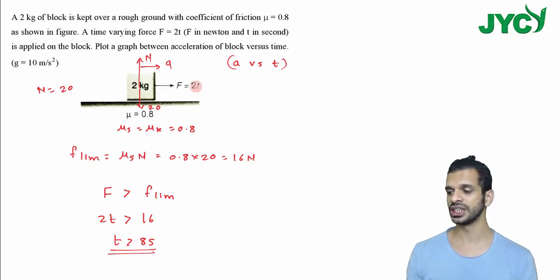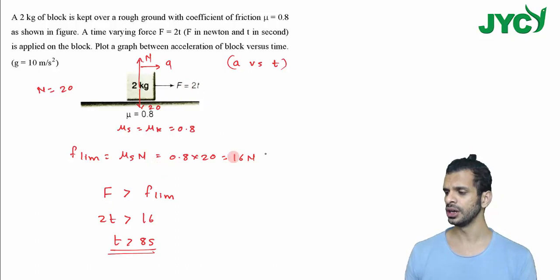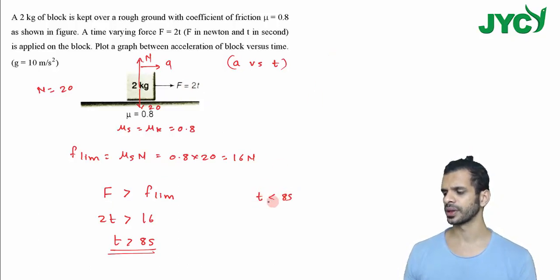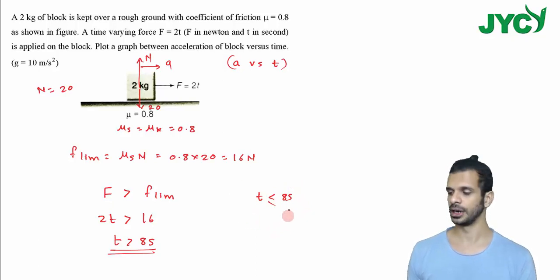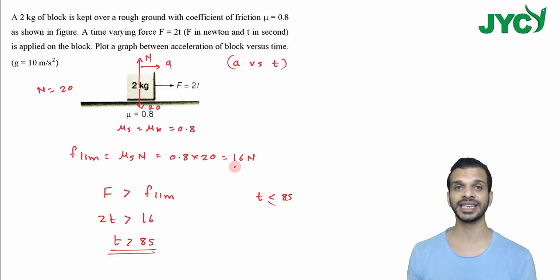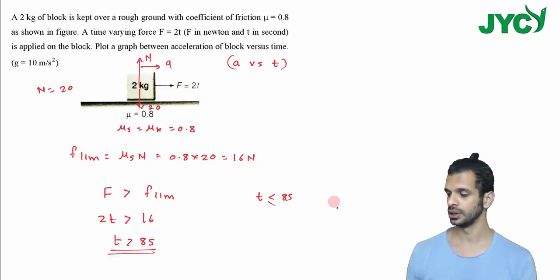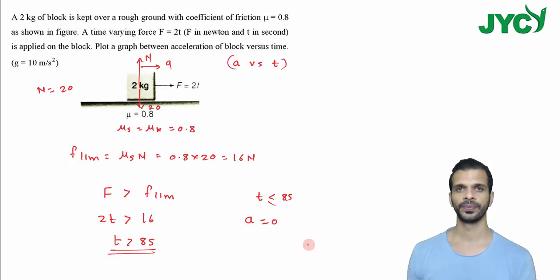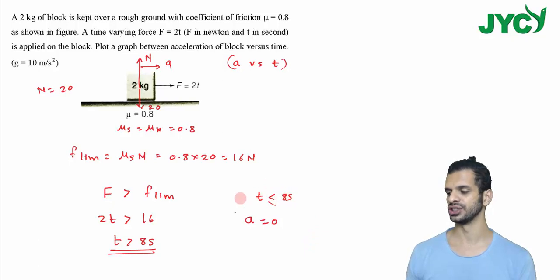When t is greater than 8 seconds, the force will exceed 16 Newton and the block will start moving. When time is less than 8 seconds, the force is less than 16 Newton, which is less than the maximum static friction. So the acceleration is 0 when t is less than 8 seconds.